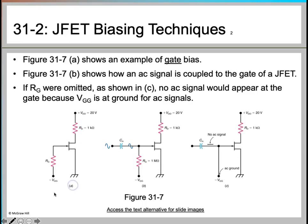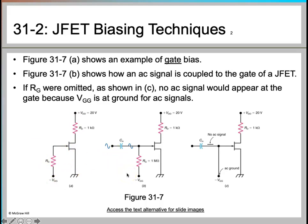Let's begin with the first type: gate bias. On screen we see three different circuits. The first circuit is the gate bias circuit, where we have an RD resistor connected to positive VDD and the gate terminal connected to RG and further to VGG. In the second circuit, an AC signal is coupled by a capacitor going to the gate terminal.